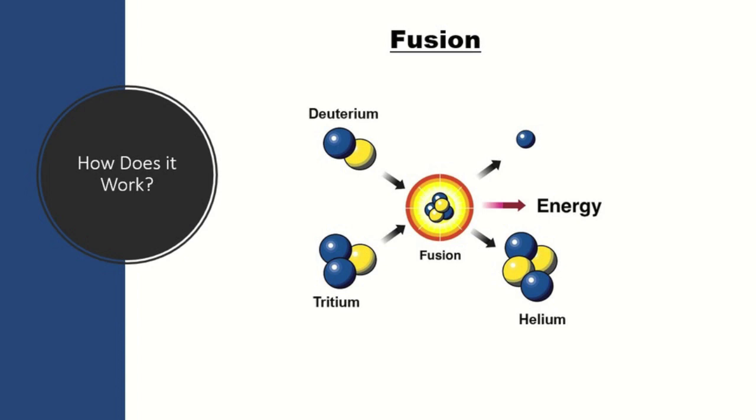These isotopes are called deuterium and tritium as they combine one and two neutrons respectively. One advantage of fusion is that there is no nuclear waste. The only byproduct is helium, an inert gas.